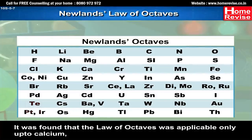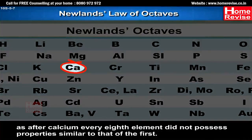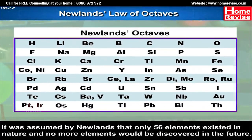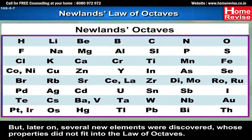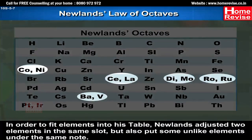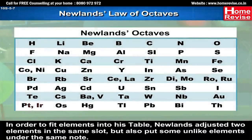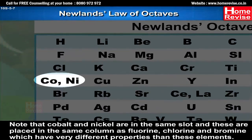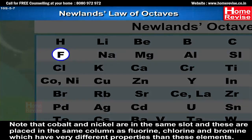It was found that the Law of Octaves was applicable only up to calcium, as after calcium every 8th element did not possess properties similar to that of the first. Newlands assumed that only 56 elements existed in nature and no more would be discovered. But later, several new elements were discovered whose properties did not fit into the Law of Octaves. To fit elements into his table, Newlands adjusted two elements in the same slot and put some unlike elements under the same column. For example, cobalt and nickel are in the same slot and are placed in the same column as fluorine, chlorine and bromine, which have very different properties.